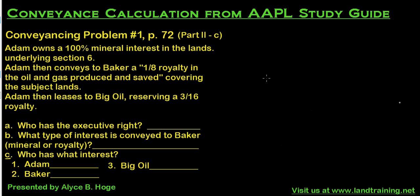Let's go through the scenario again. I've already done A and B. In A, I said Adam had the executive right and the type of interest he conveyed was a royalty interest. So now we're going to say what specific interest does everybody own. The problem states: Adam owns a 100% mineral interest, meaning we're going to take an oil and gas lease from Adam, who owns the minerals underlying Section 6.